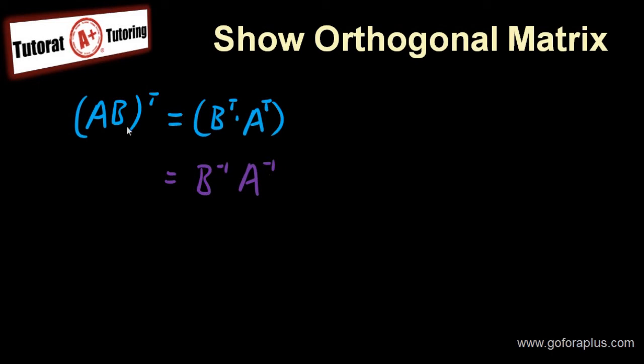Now, using the properties again, you can take out the minus one. But by taking it out, you have to flip the matrix. So it becomes AB minus one. And this is basically what I want to show. AB transpose is AB minus one. So this is also good now.